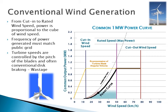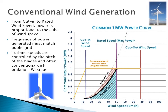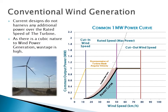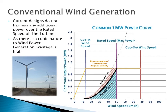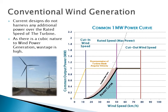From the cut-in wind speed to the rated wind speed, all possible power is generated from the available power. The available power is shown by the black dashed line and will be covered in discussion later. Once at or above the rated wind speed, the turbine can no longer produce more power due to generator sizing and structural design of the tower. Therefore, above the purple line, the turbine blade rotation and generation are kept constant.